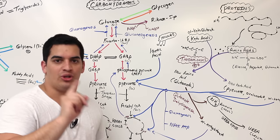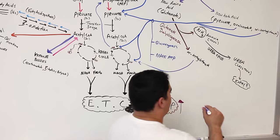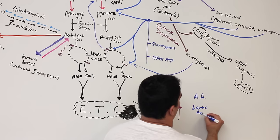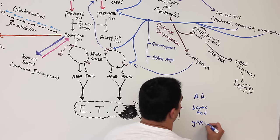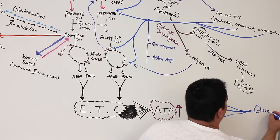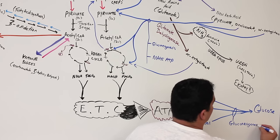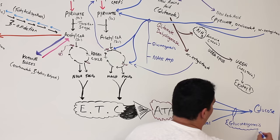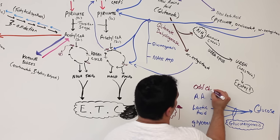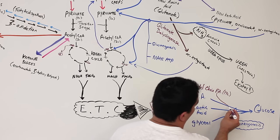I want you to remember three different substrates that can be used for gluconeogenesis. Those three substrates are: amino acids, lactic acid, and glycerol — all converted into glucose through gluconeogenesis. Technically there is one more substrate, but it contributes in very minimal amounts. That's odd-chain fatty acids — instead of 16 carbons, it would be like 17 carbons — and they produce a three-carbon fragment that could eventually be converted into glucose.